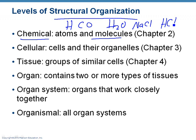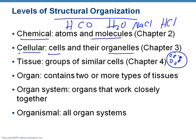You take a bunch of chemicals and put them together, and you get the cellular level of organization. A cell is like a blood cell, skin cell, or muscle cell. Cells have what are called organelles inside of them — so cells have parts, like a nucleus, mitochondria, ribosomes, endoplasmic reticulum, things like that.